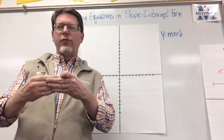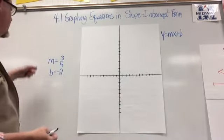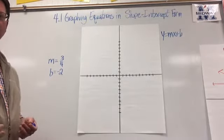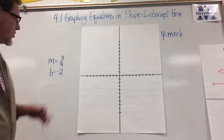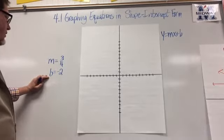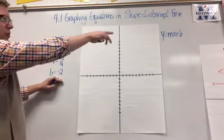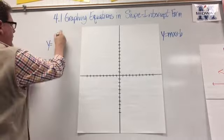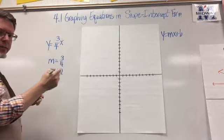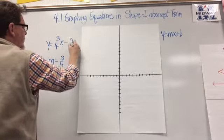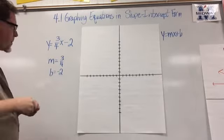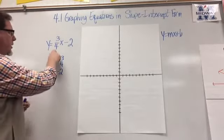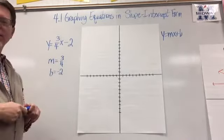Let's say I'm given that the slope is 3/4 and the y-intercept is negative 2. First I need to come up with an equation. If my slope is 3/4 and my y-intercept is negative 2, I can just plug in m and b to get y equals 3/4 x minus 2. Now I can take this equation and graph it — I know the slope is 3/4 and the y-intercept is negative 2.